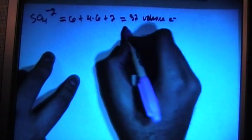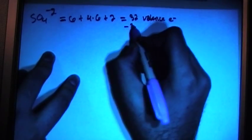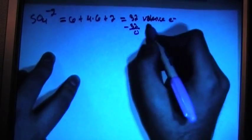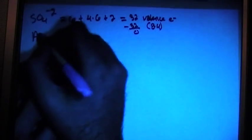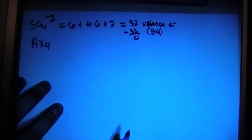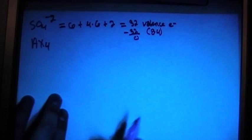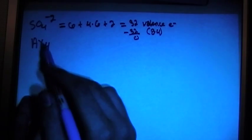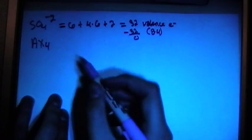If we do the trick where you subtract the largest multiple of 8, that's going to give you minus 32, which is 0, and that's 8 times 4. So that means this is going to be an AX4 shape, and we'll come back to that in a bit. That means there's going to be 4 atoms attached to the center sulfur, which is the 4 oxygens, and there's not going to be any lone pairs.